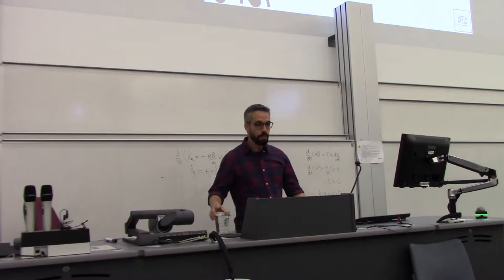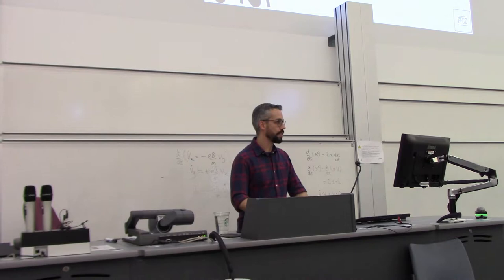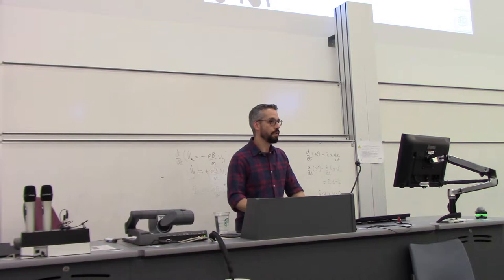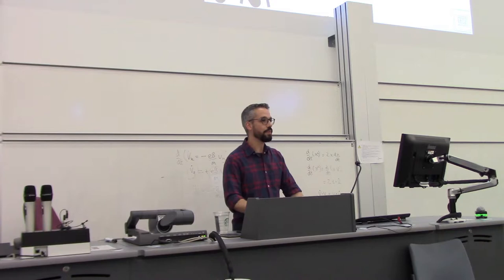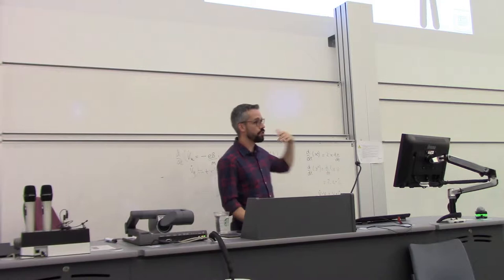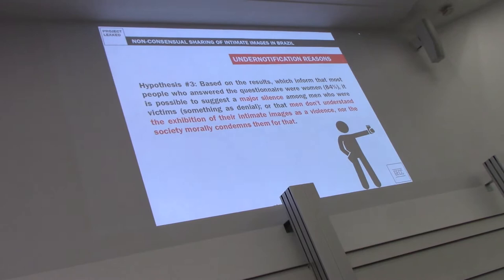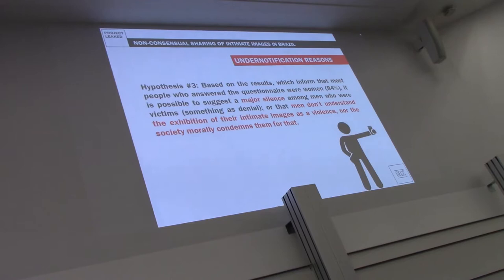Second hypothesis is that people might not report because they believe they are responsible for doing that. They took the risk. It was really interesting that some of the answers we received were similar to other research in the United States based on universities. A lot of people believe they are responsible, they are the ones to blame because their image was shared without consent. Third hypothesis is that most victims are women, and we identified a major silence among men. They don't want to talk about it, or there is this possibility that they don't understand the exhibition of their intimate images as violence. Nor the society condemns them for that.